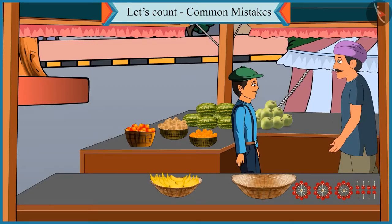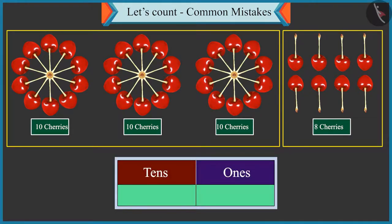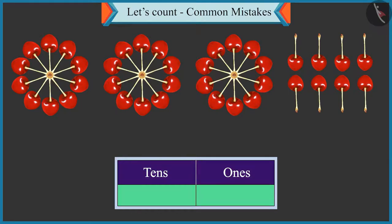Now tell me, how will you write three groups of tens and eight single cherries in the form of tens and ones? Eight in the box of tens and three in the box of ones.